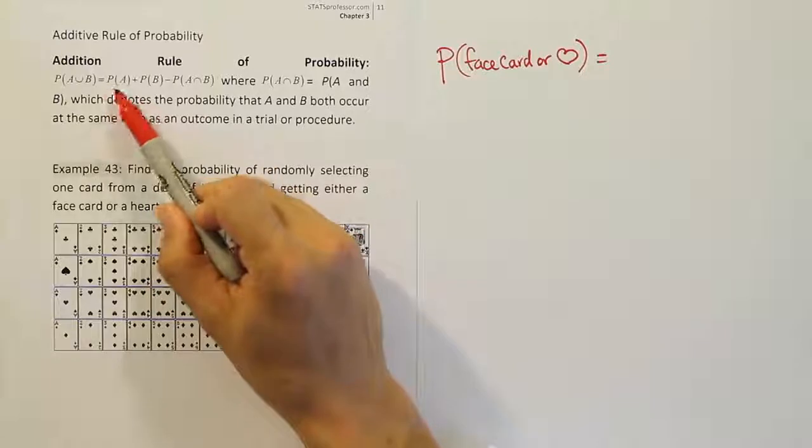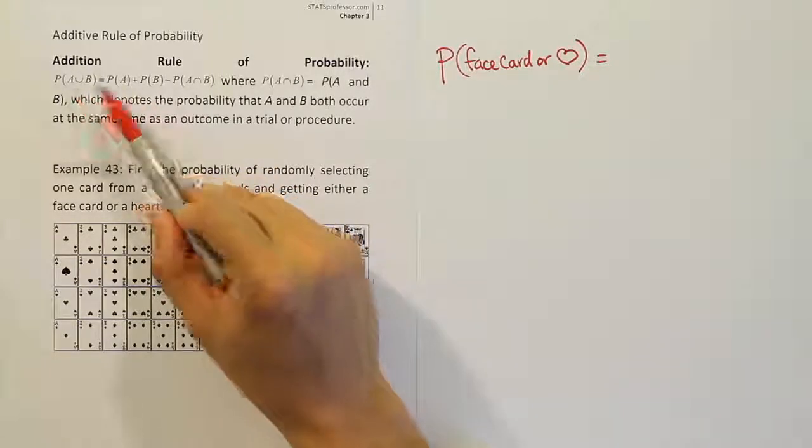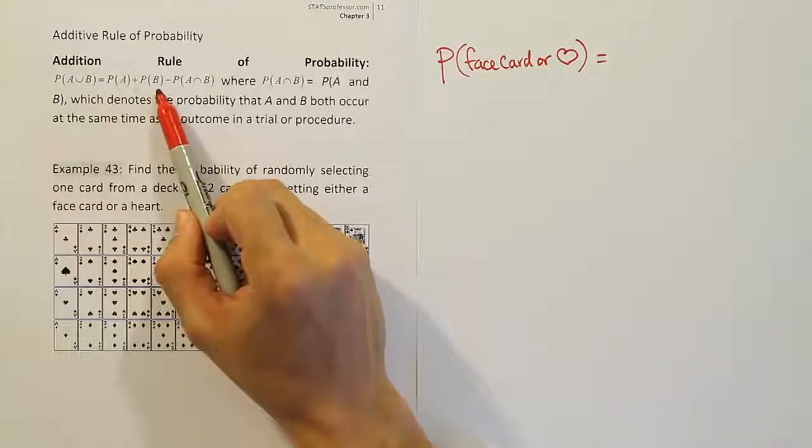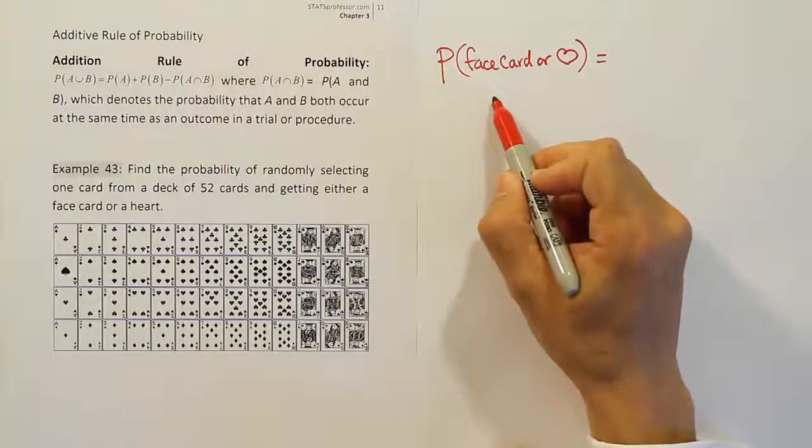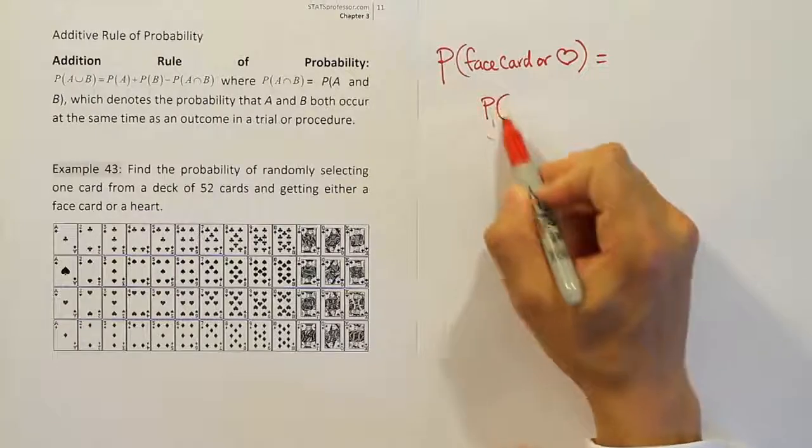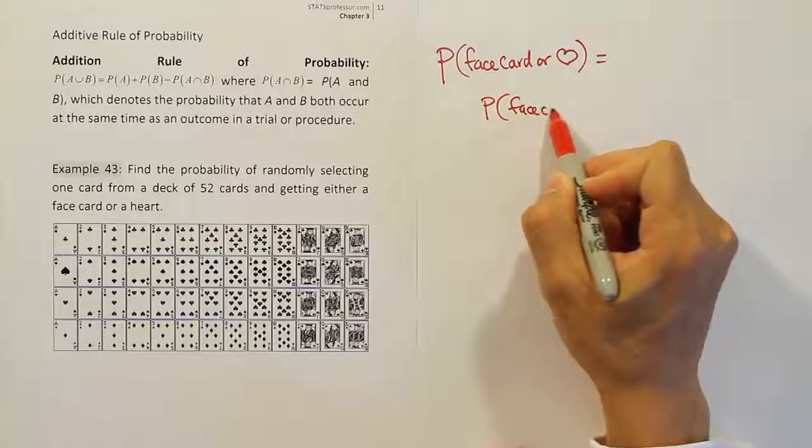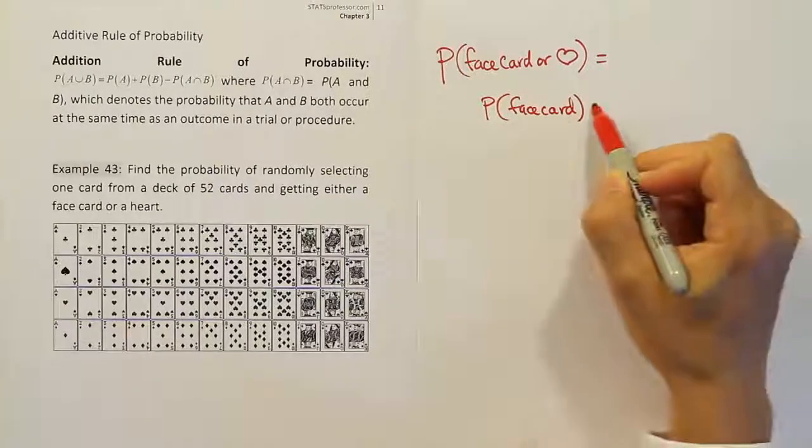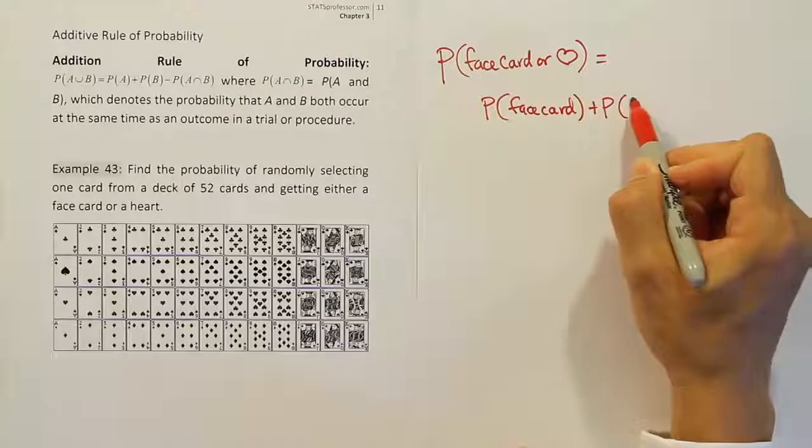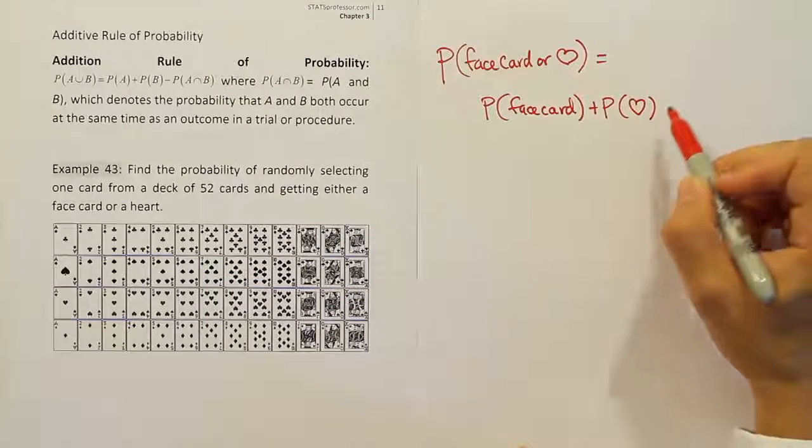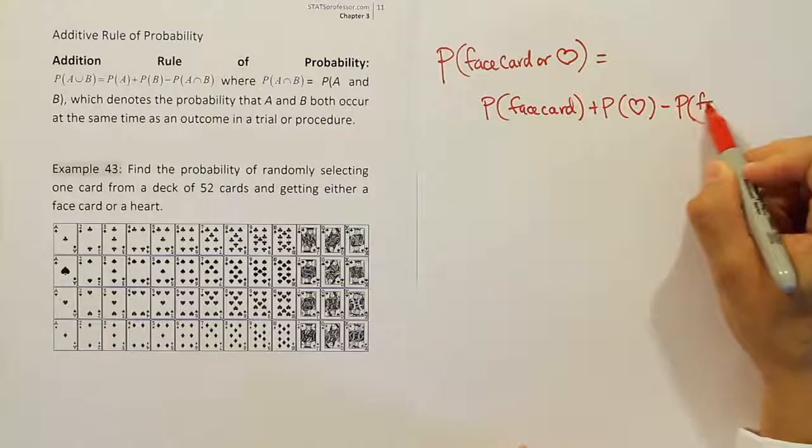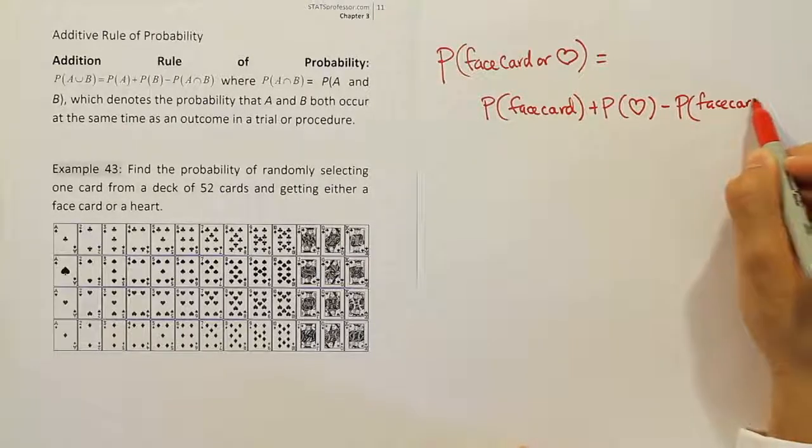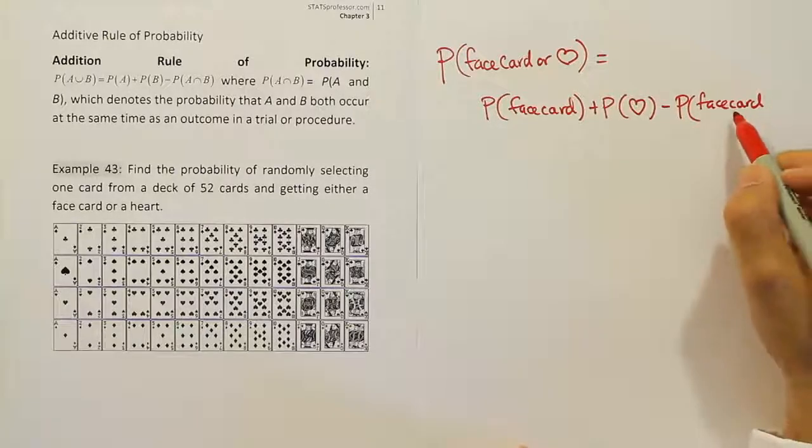If you look at it, it says the first thing, find its probability, the second thing, find its probability, and then subtract off the intersection of the two things. So I'm going to write it this way. I'm going to say that means that this becomes the probability of a face card. Plus the probability of a heart. Minus the probability of, and if you look at the notation, it's going to say face card.